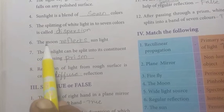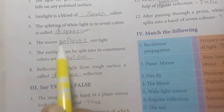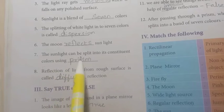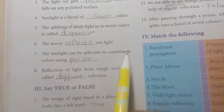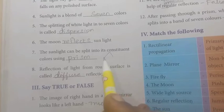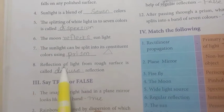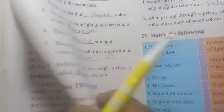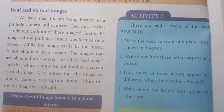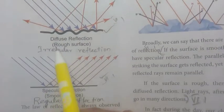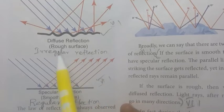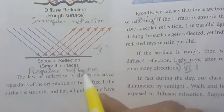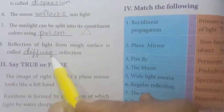The moon reflects sunlight. Sunlight can be split into its component colors using a prism. The reflection of light from a rough surface is called diffuse reflection or irregular reflection. A smooth surface produces regular reflection or specular reflection.